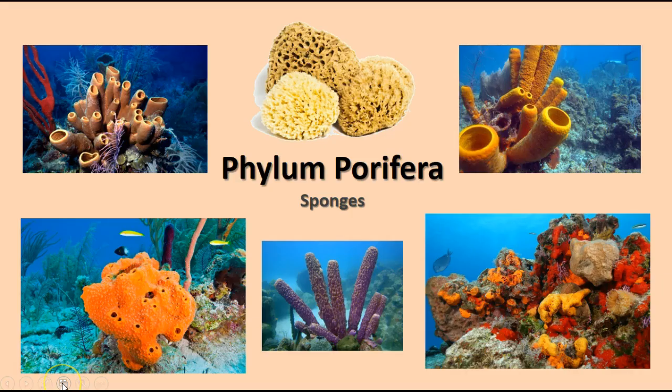The first group of animals we'll talk about is Phylum Porifera. These are the simplest animals we have — these are the sponges. You oftentimes don't think about sponges as being animals because they don't exhibit a lot of animal-like characteristics, but they are definitely animals. They are multicellular, heterotrophic, and ingest their food. They do not have cell walls, and that's what makes them animals.